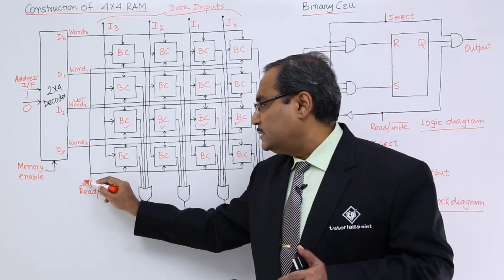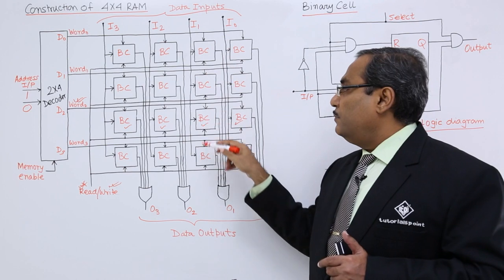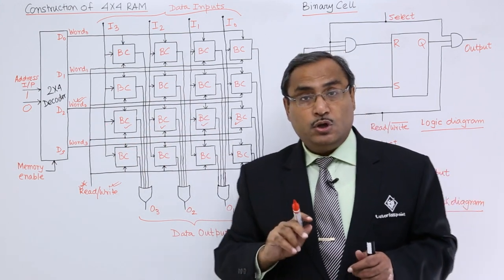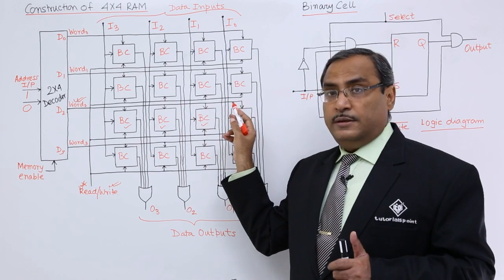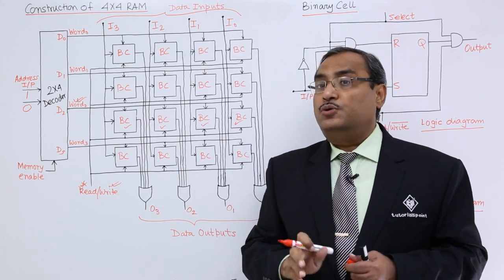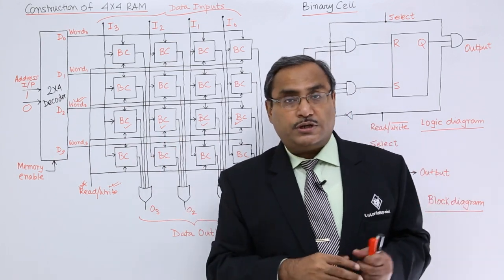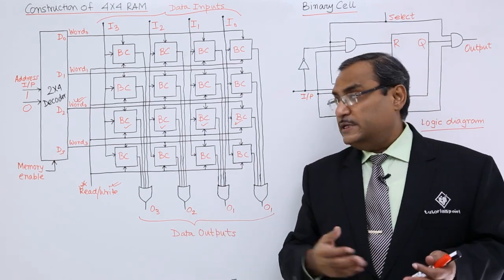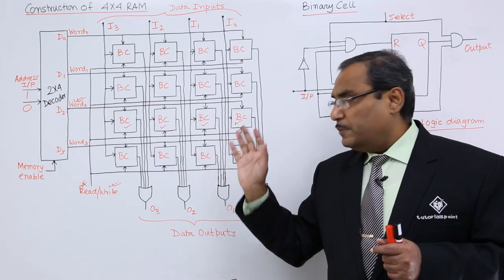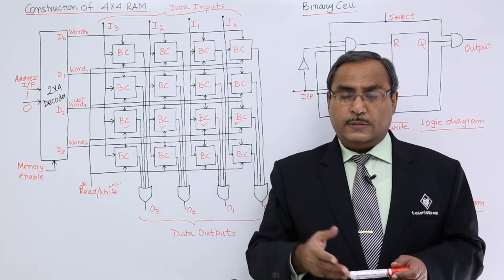If we select write mode instead, the input lines available to all 4 binary cells in the selected row will cause the input bit to be written onto the selected binary cells. So depending upon the selection line and the mode, either the data is written to or read from the binary cells. In this way, we have discussed the construction of this 4×4 — that is, 4 rows and 4 columns — RAM circuit in detail. Thanks for watching this video.